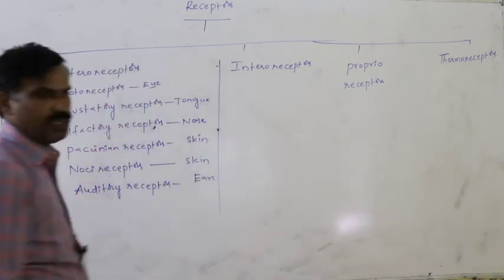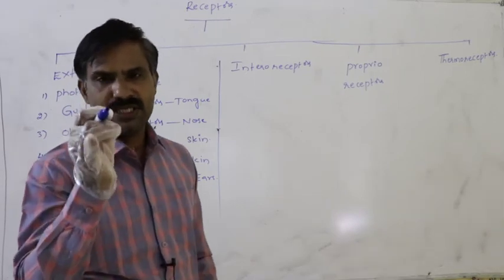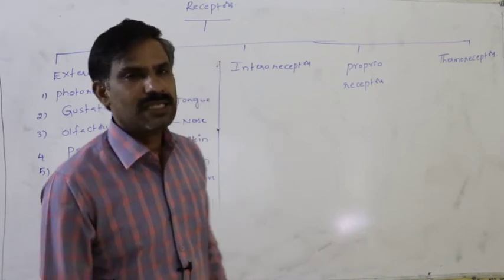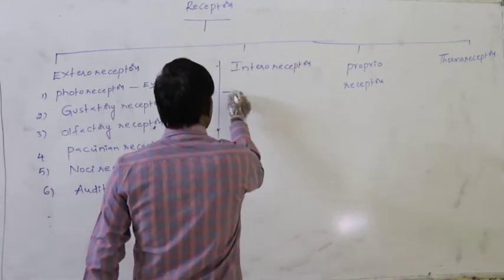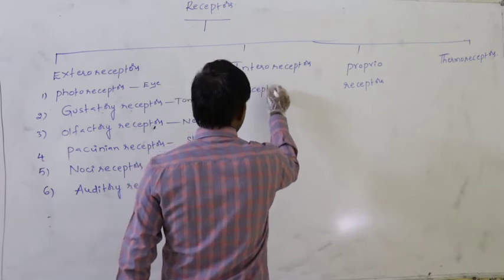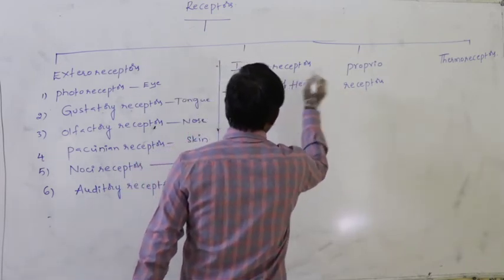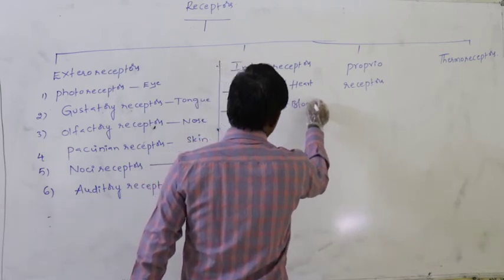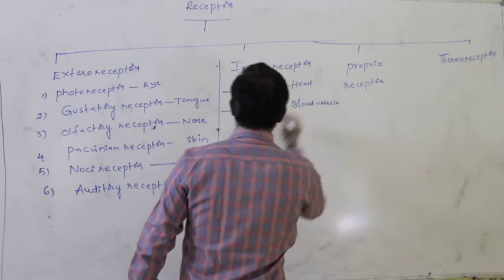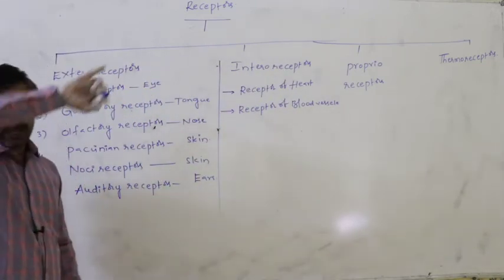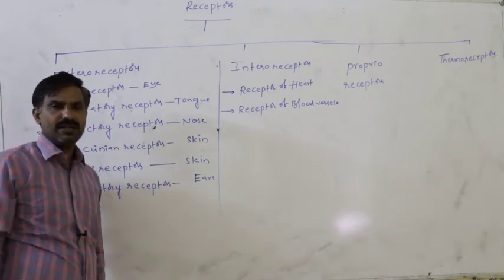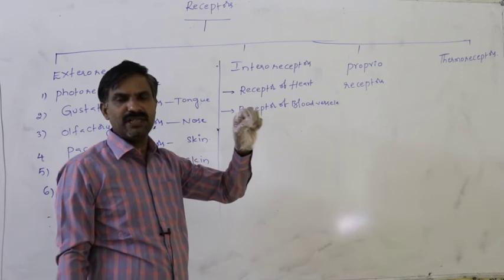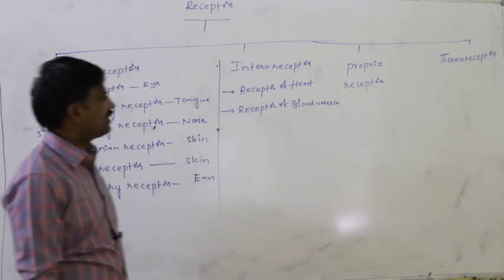Interoreceptors are receptors present inside visceral organs. Better examples include receptors of the heart and receptors of blood vessels. Any receptor present inside an internal organ wall is said to be an interoreceptor — a receptor present in a visceral organ is said to be an interoreceptor.